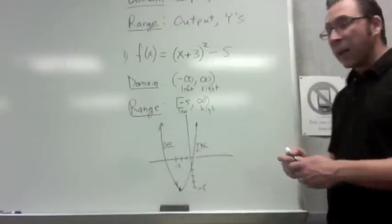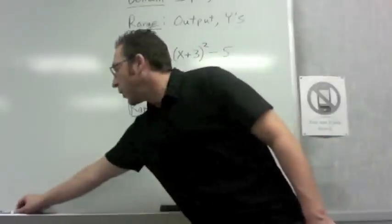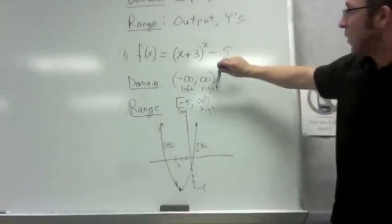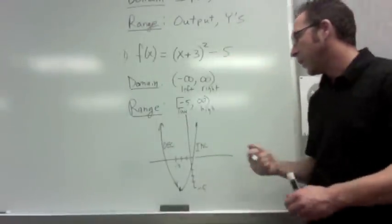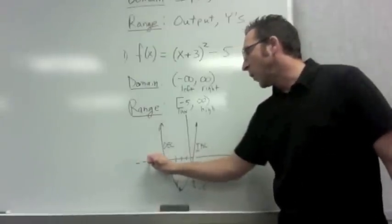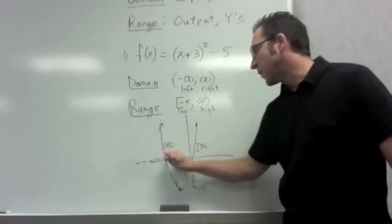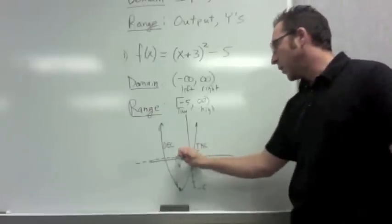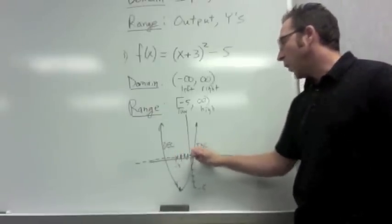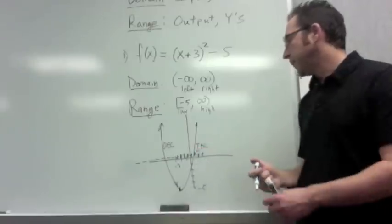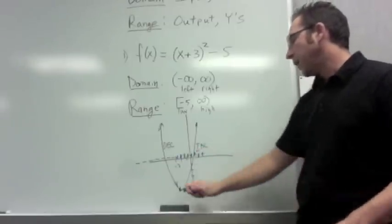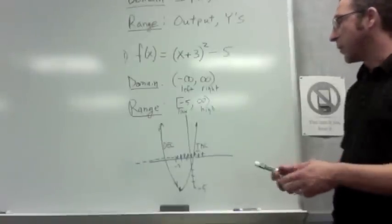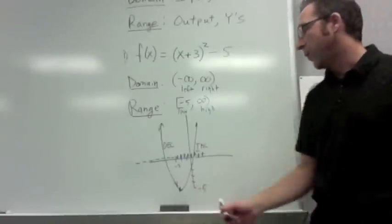Remember that when you're talking about increasing and decreasing, you are giving a subset of the domain. So we want to always talk about x values only. The graph is decreasing until we get to negative 3, and then it increases once it gets past negative 3. At negative 3, the slope is 0. So it's neither decreasing or increasing at negative 3.